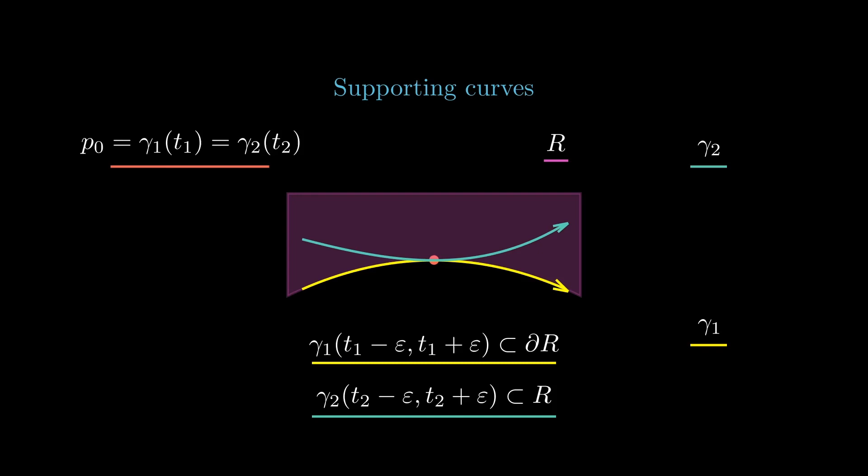That is, right before passing through p and right after passing through p, and the portion of gamma1 corresponding to the interval t1 minus epsilon t1 plus epsilon is a portion of the boundary of r.